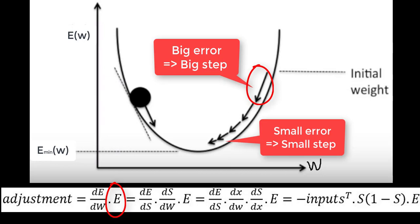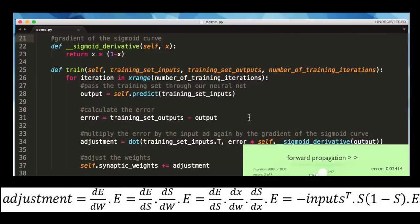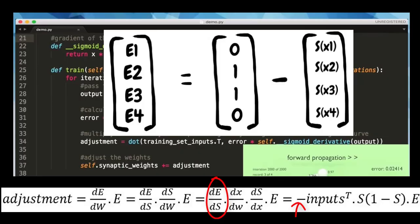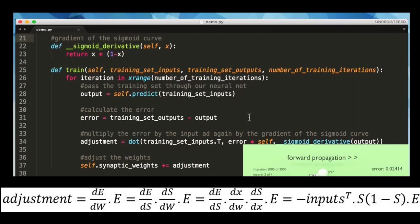We can also think of the error as the learning rate. Mathematically, de/dw times e can be written using the chain rule. Now we can evaluate the derivatives separately. The error is given by training set output minus the sigmoid predicted output, so de/ds is simply minus 1. Next, dx/dw is the transpose of the input matrix.